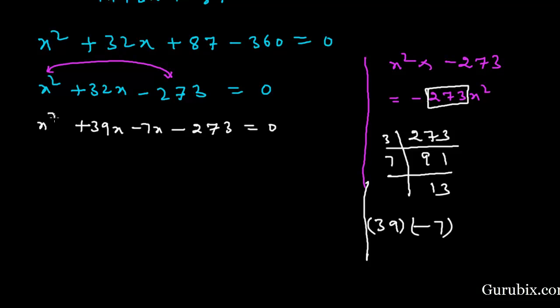Here is X square. We shall take common X from these two terms, then we have X plus 39. We shall take common minus 7 from last two terms. Then we have X plus 39 equals 0. Here is X plus 39 multiplied by X minus 7 equals 0.